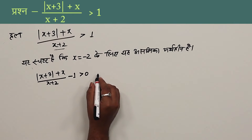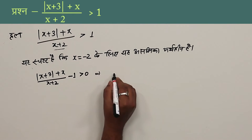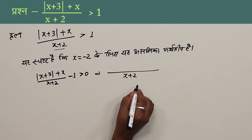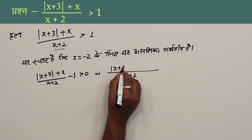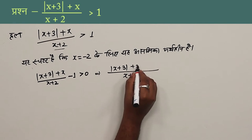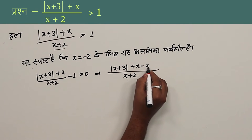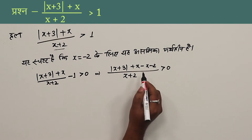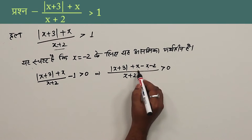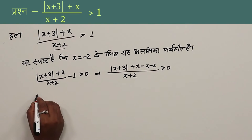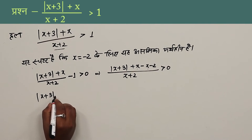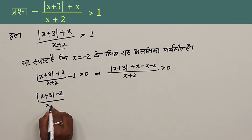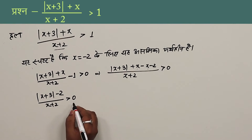This simplifies to: mod of (x+3) minus 2 upon (x+2) is greater than 0. So we see that mod of (x+3) is the key expression, and there are two cases.